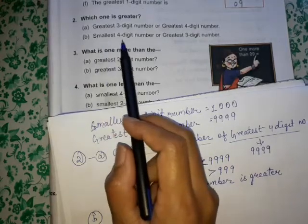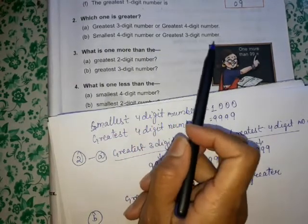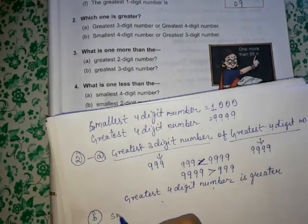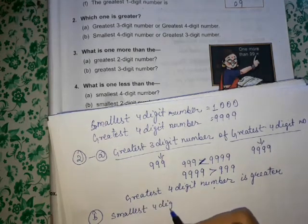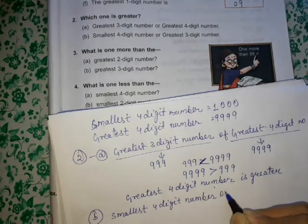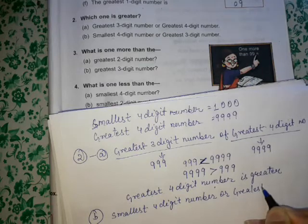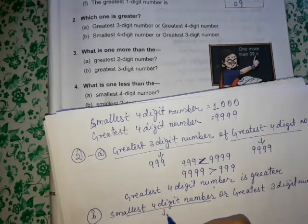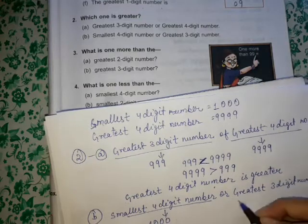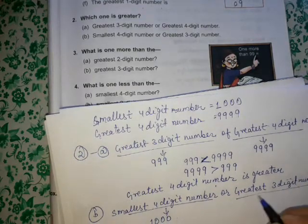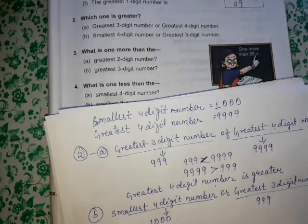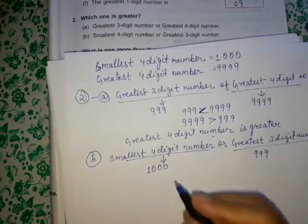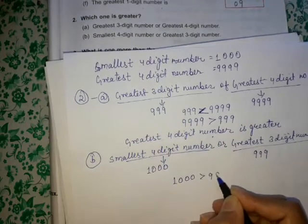Part B: Which one is greater — the smallest 4 digit number or the greatest 3 digit number? The smallest 4 digit number is 1000 and the greatest 3 digit number is 999. Which one is greater?